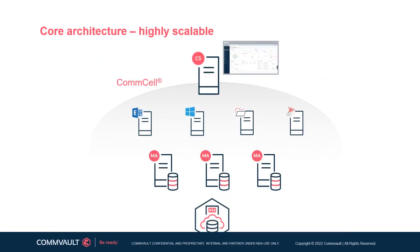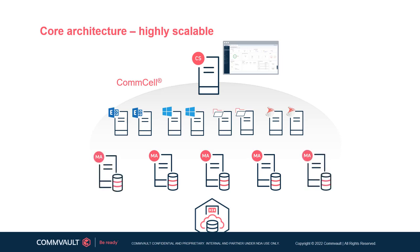Commvault software is also renowned for its scalability. As the number of clients or data sets managed in an environment increases to a threshold where the original number of media agents cannot accommodate a customer's established protection and recovery SLAs, it is very simple to scale the environment by deploying additional media agents. This core architecture also facilitates back-end scaling of deduplication and non-deduplication storage targets, and Commvault software alerts users allowing them to easily add additional storage as capacity is consumed.